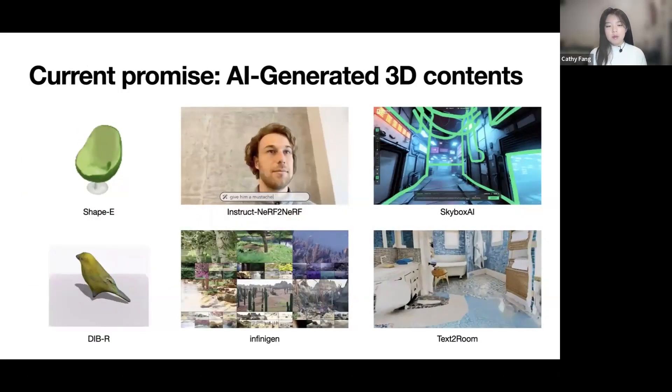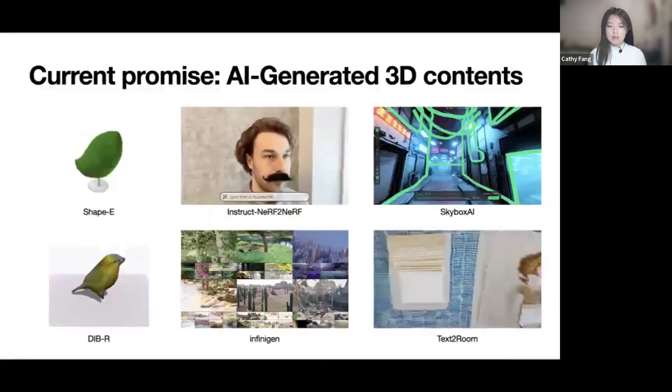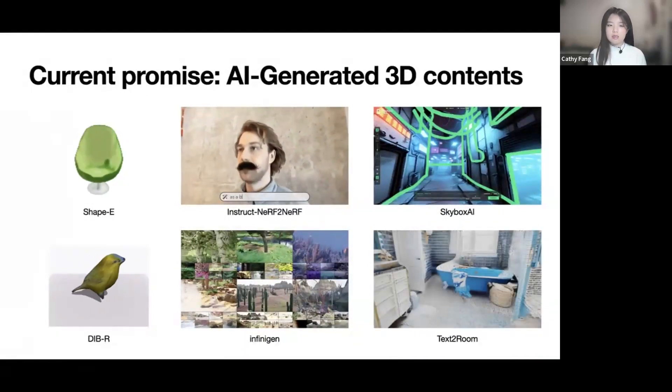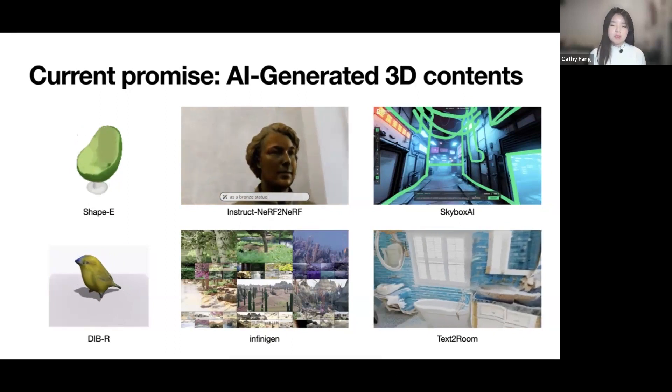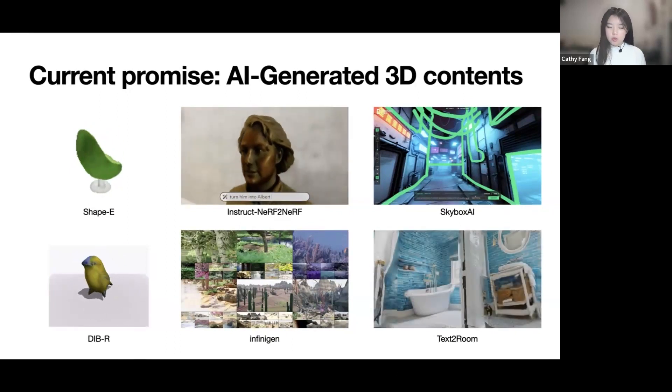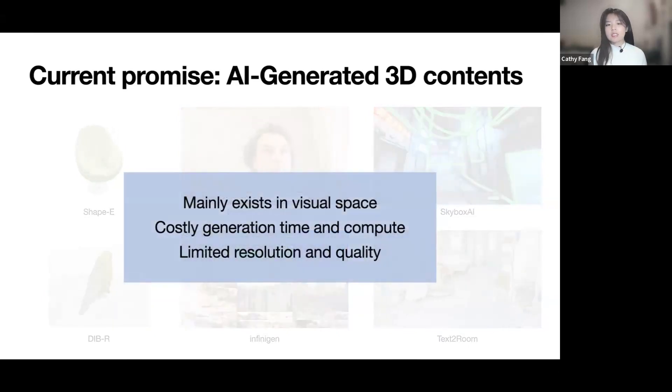With generative AI, people can not only create new texts, images, but also 3D contents such as objects, scenes, and skyboxes. And a list of examples has since outgrown, but as of now, they mainly exist in visual space where they lack interactivity. In addition, these diffusion-based methods often require a substantial time and compute to generate while the quality and resolution is limited.